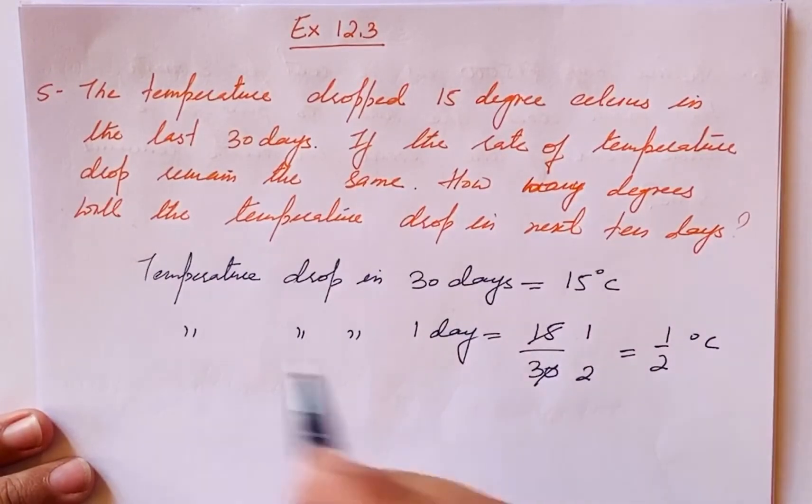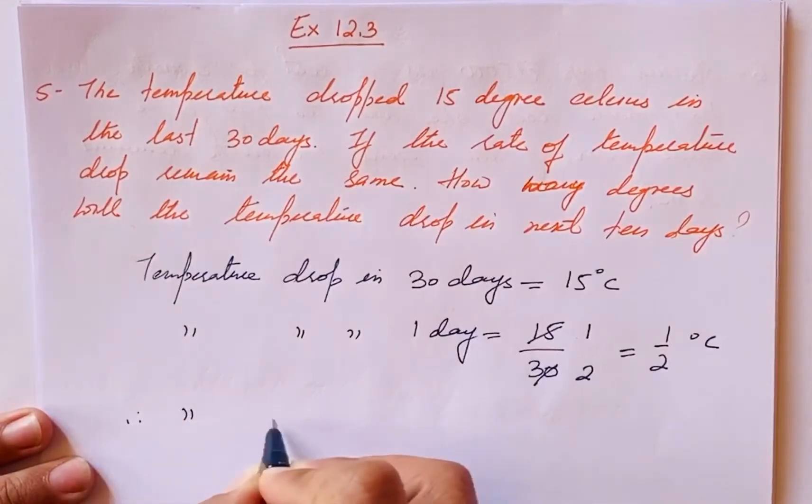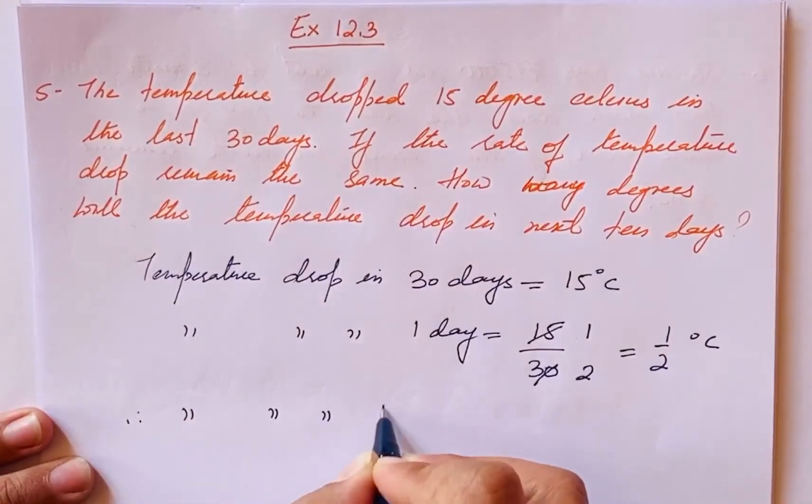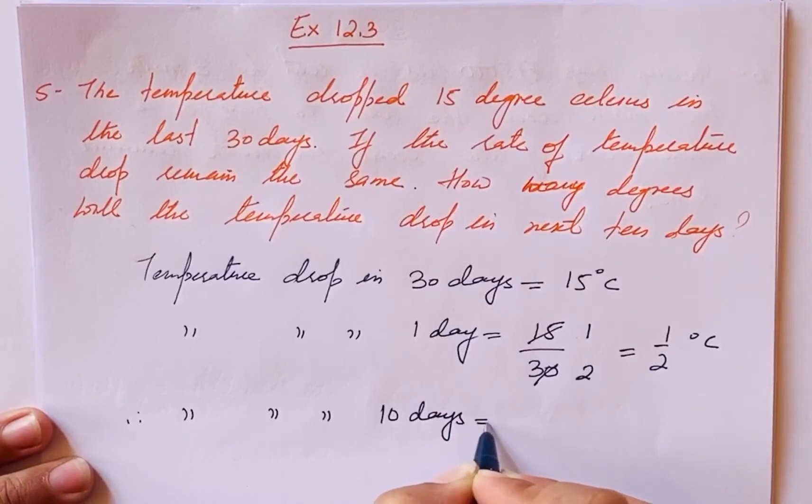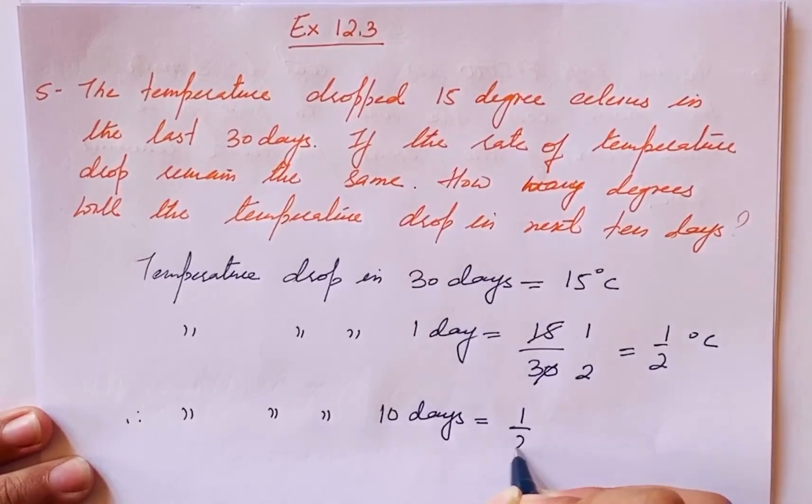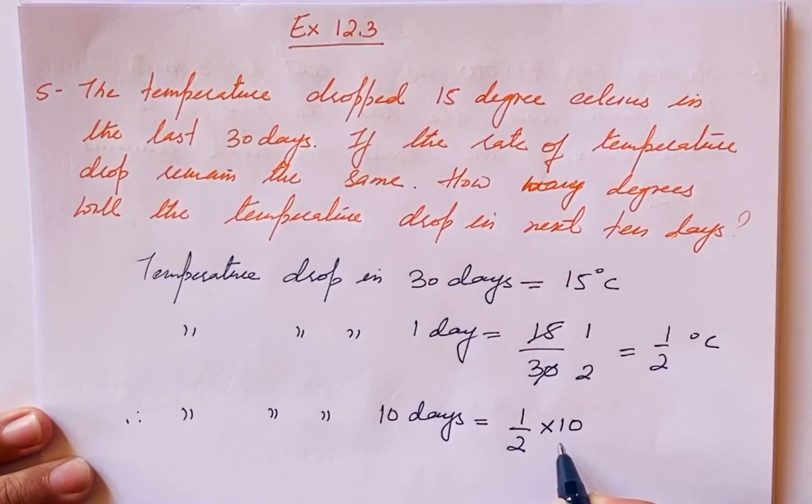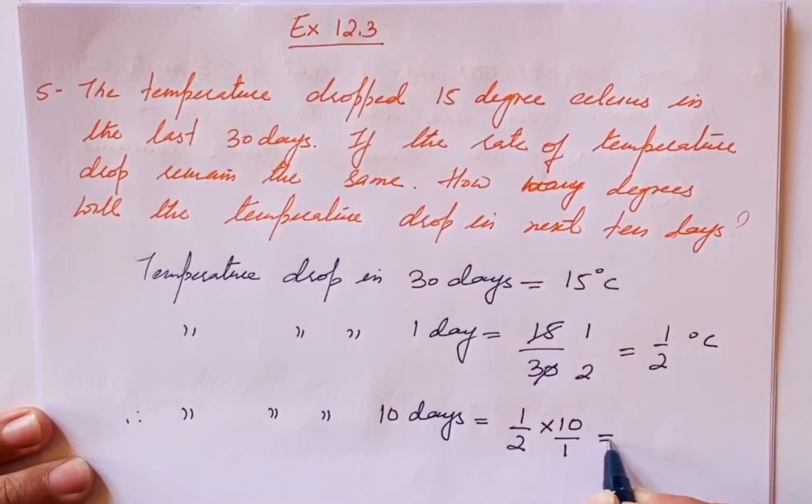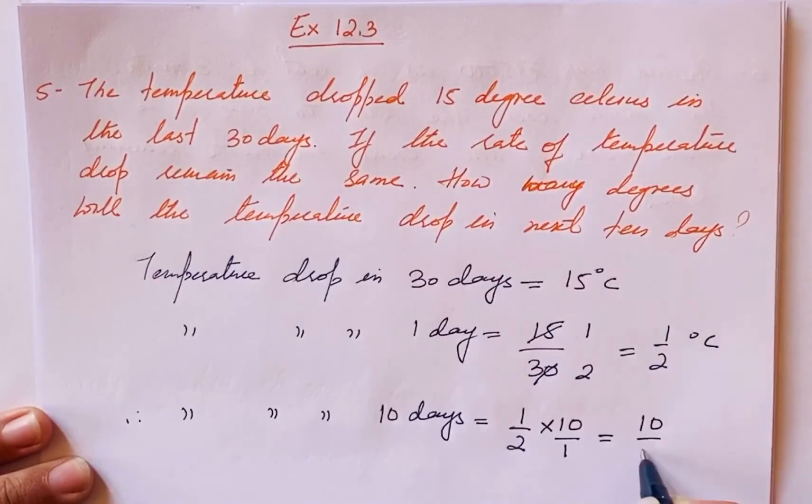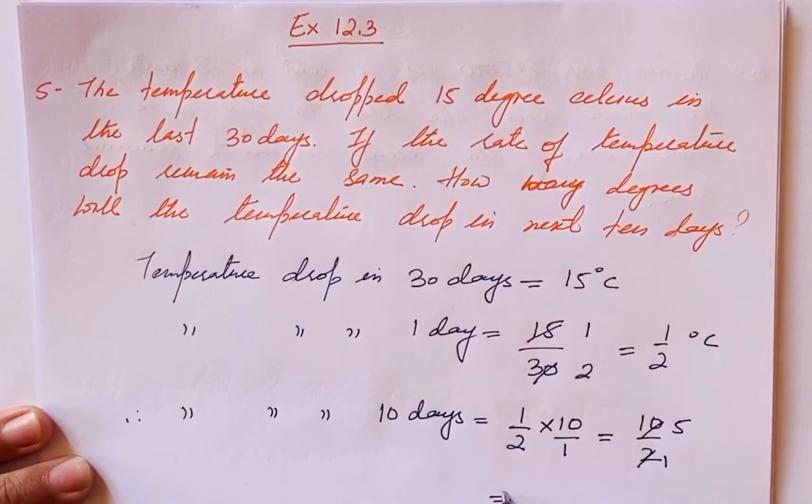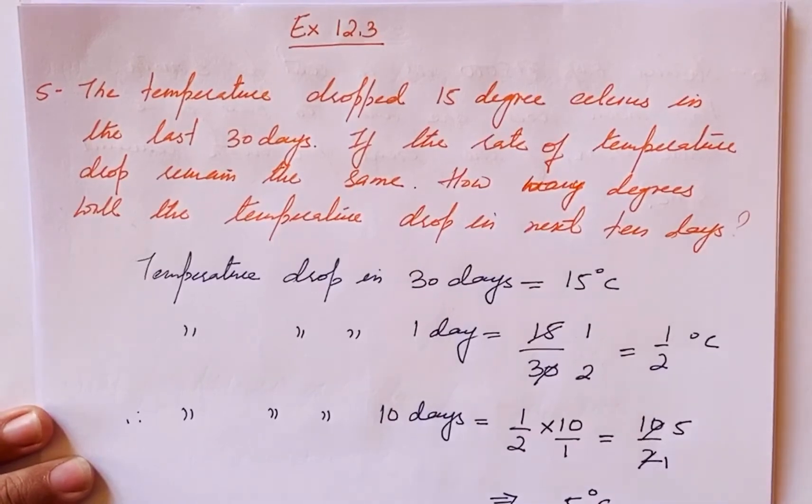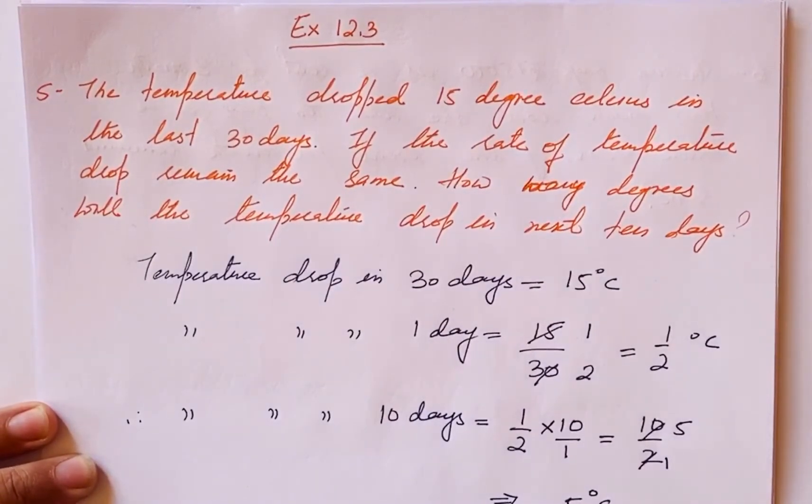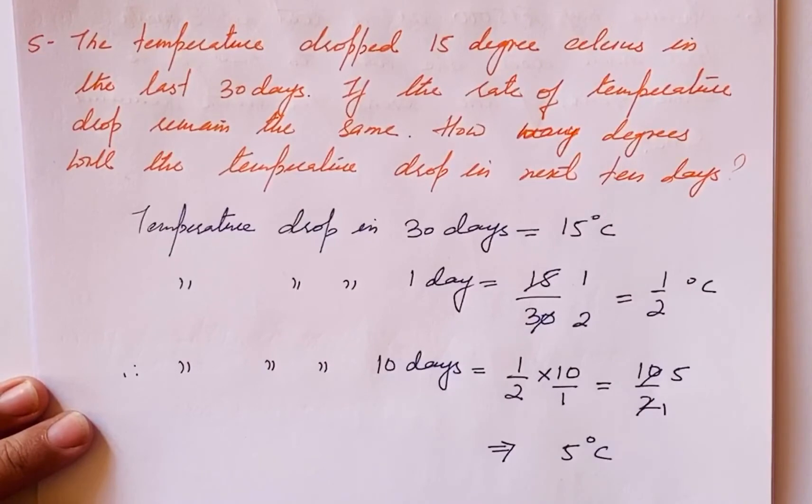In one day, 1/2 degrees Celsius drop happens. Don't calculate in decimal, keep it as a fraction. Now for the next 10 days: temperature drop in 10 days. One day is 1/2, multiply by 10. Solving this gives us 10/2 = 5. So temperature drop in ten days is 5 degrees Celsius. This is your final answer.